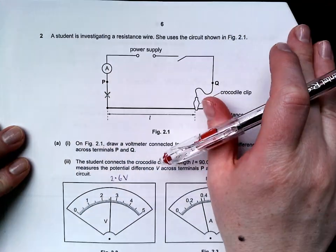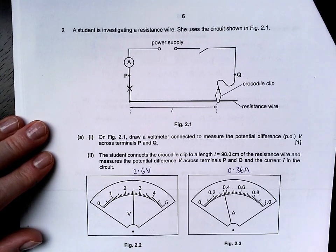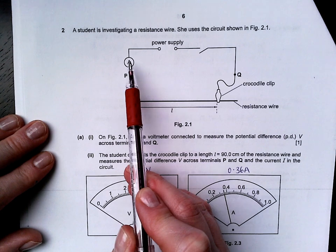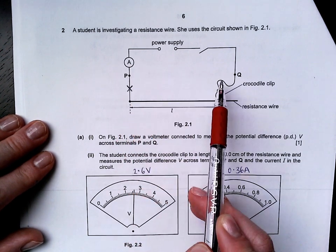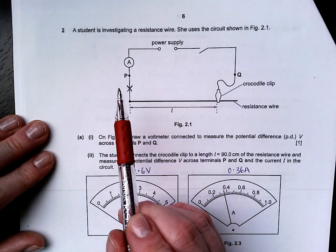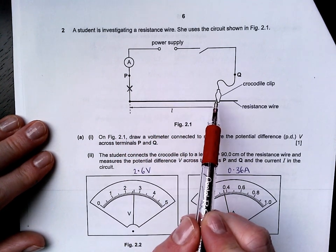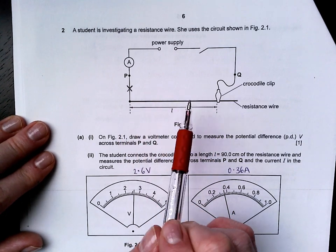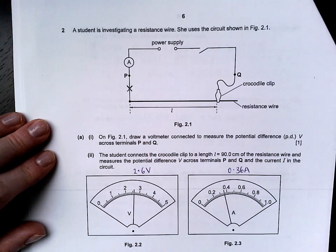In question two, a student is investigating a resistance wire. She uses the circuit shown. You can see a power supply with a switch to control the circuit, an ammeter to measure the current flow. P and Q are labeled as terminals. A resistance wire has been connected in and we can move the position of this crocodile clip to change how much of the wire is inside of the circuit.